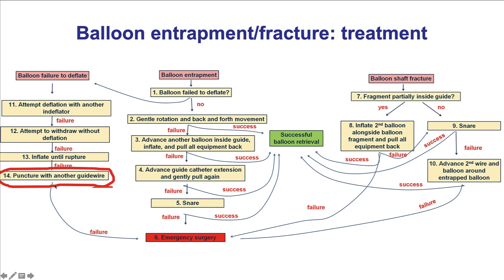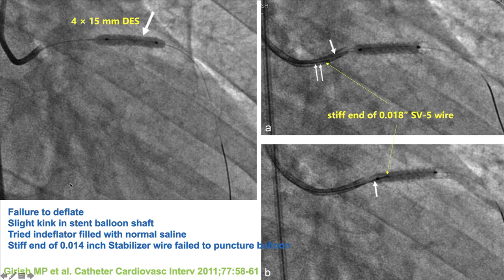Another way is to puncture the balloon with another guide wire. Here is an example: a balloon became entrapped in the proximal LAD and could not be deflated. The operators tried an endoflator filled with normal saline, but unfortunately that was not sufficient to allow deflation and removal of the balloon.